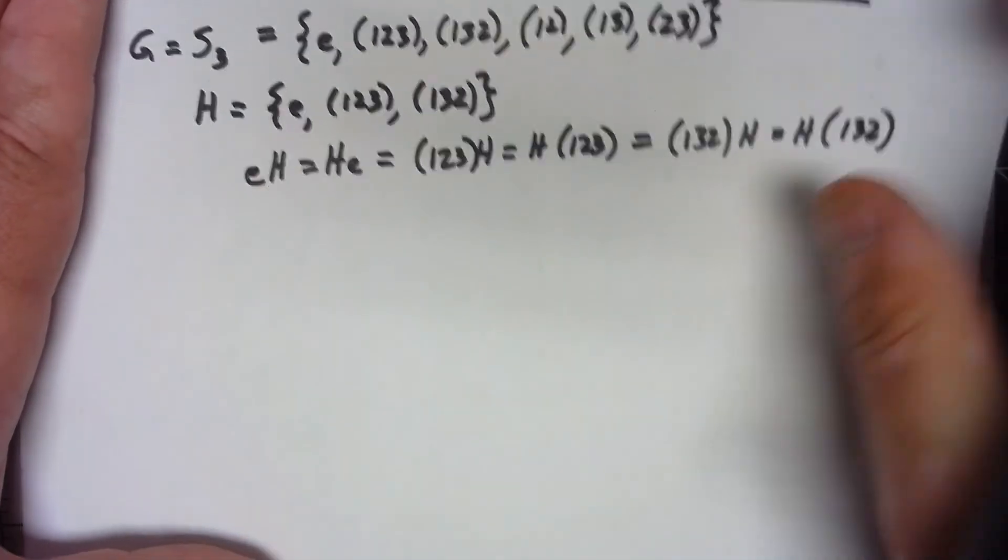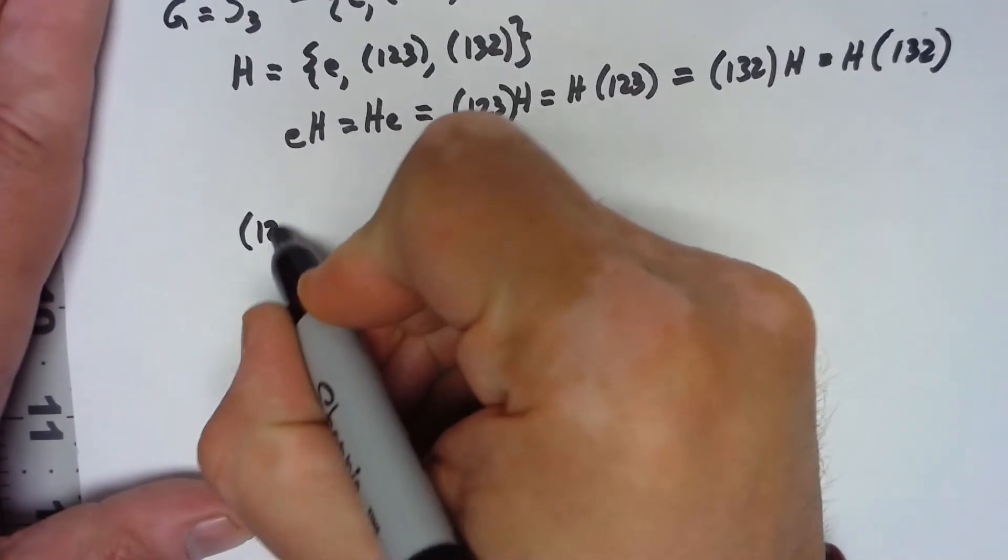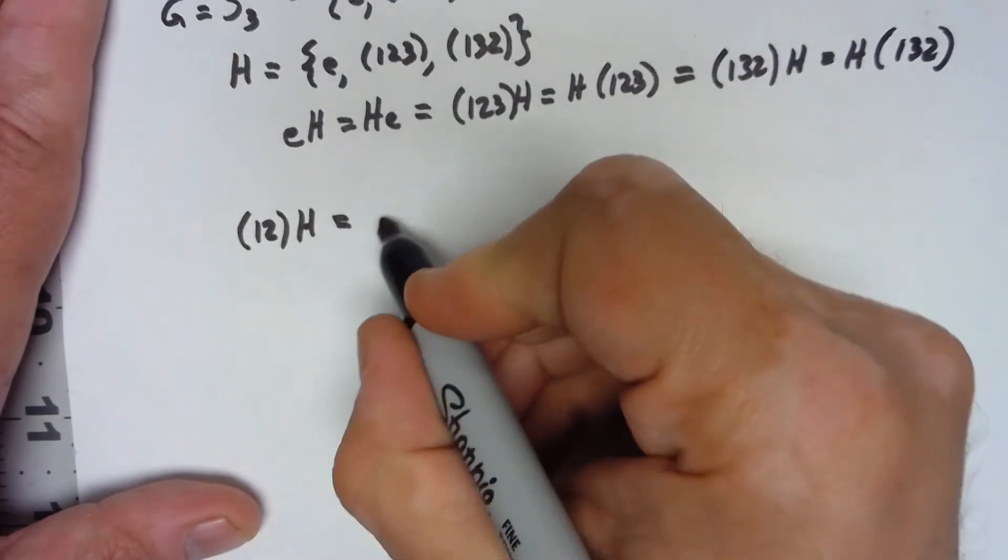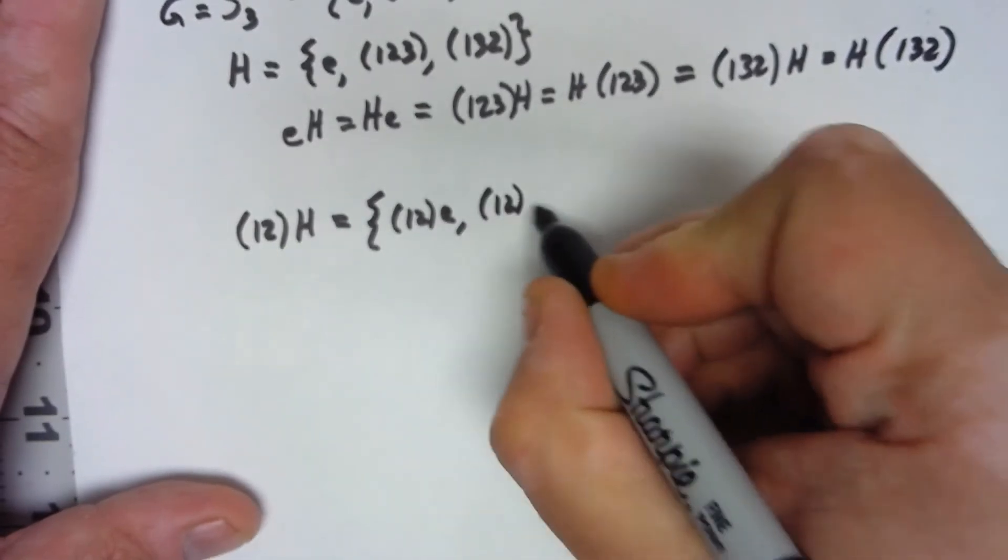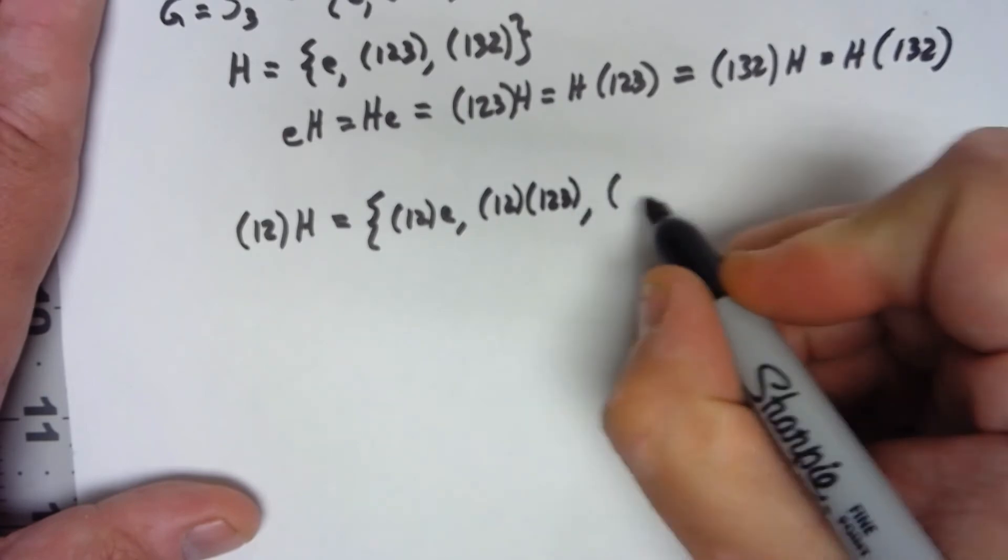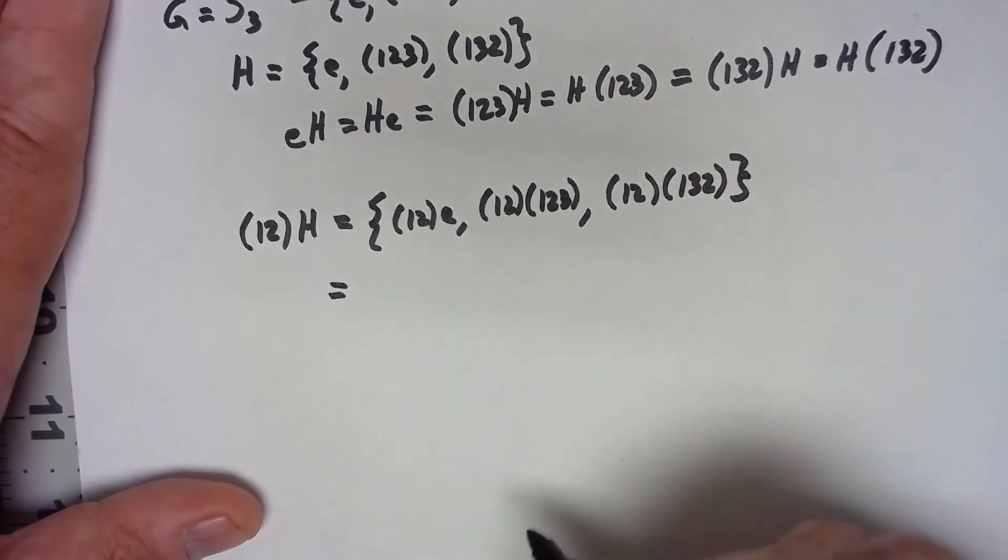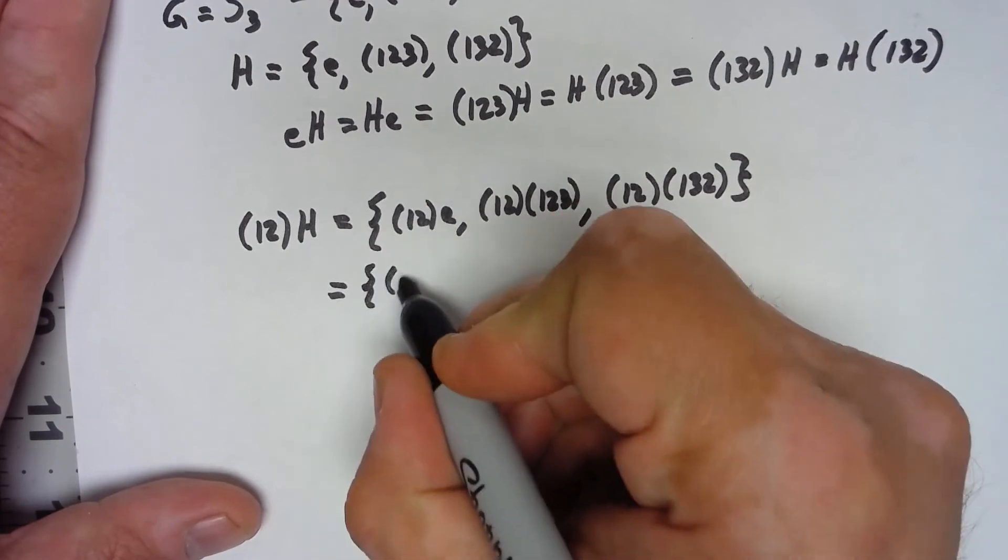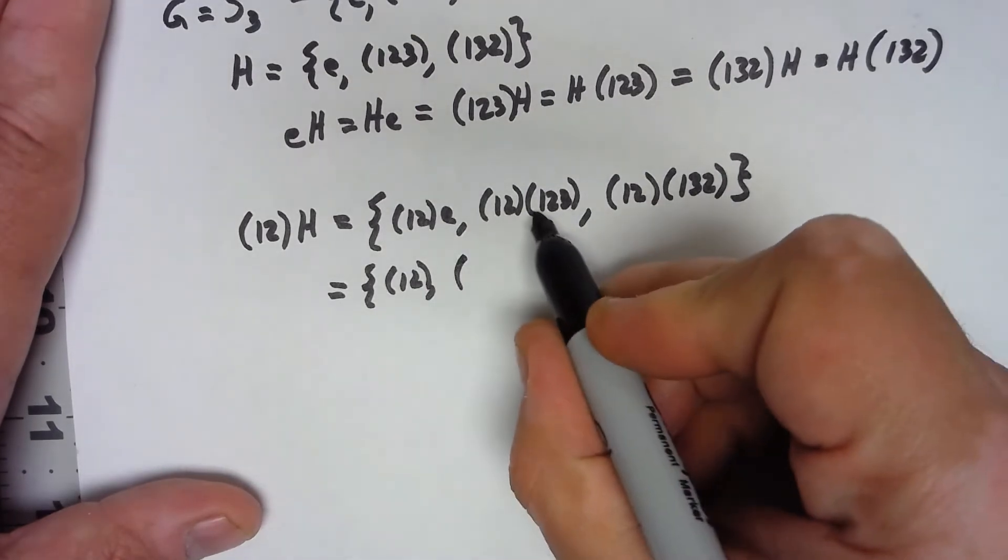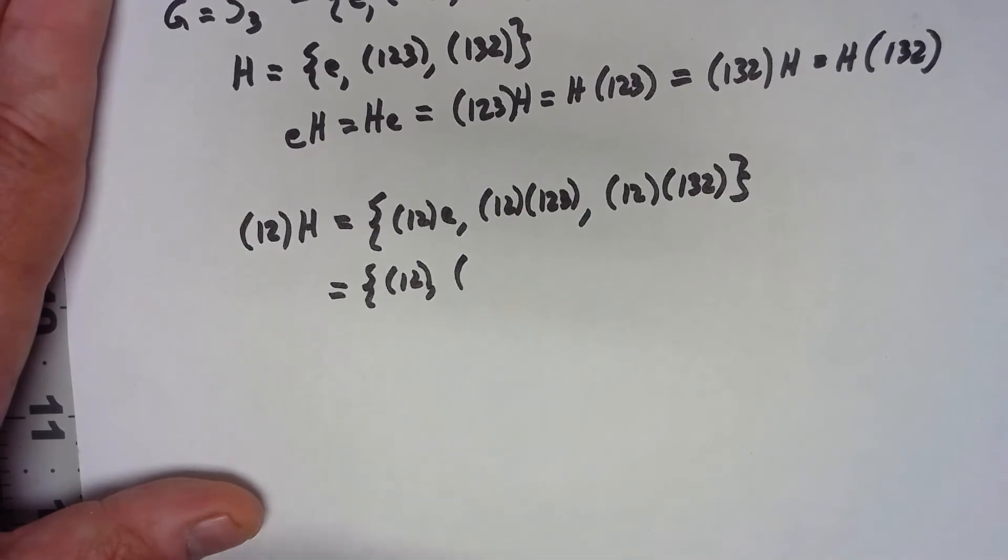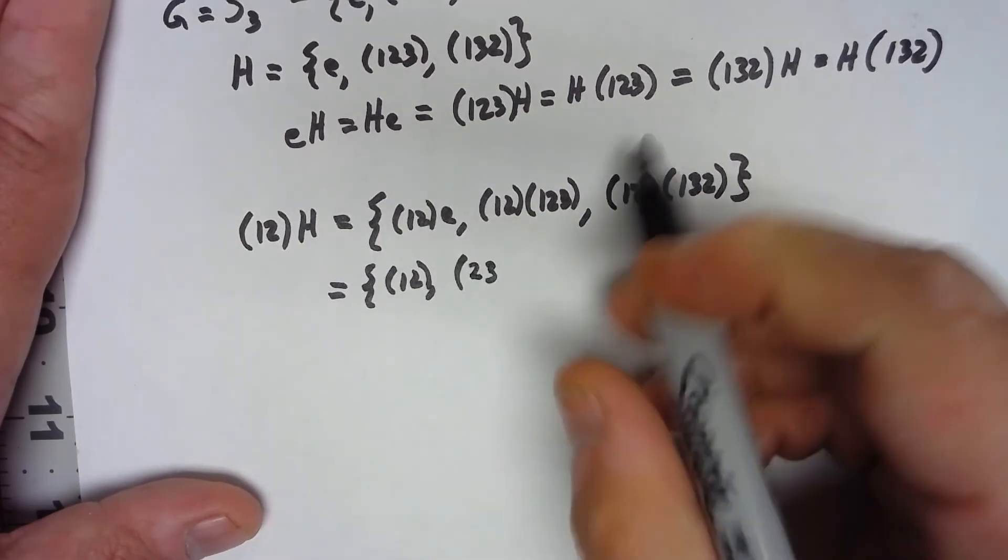I want to be really careful here. If I do (1,2)H, that's going to give me the set containing (1,2)e, (1,2)(1,2,3), and (1,2)(1,3,2). So (1,2)e is obviously (1,2). If I do (1,2) times (1,2,3), 1 goes to 2, 2 goes to 1, so 1 is going to end up being fixed. 2 goes to 3, 3 goes to 1 which goes to 2, so I'm left with (2,3).